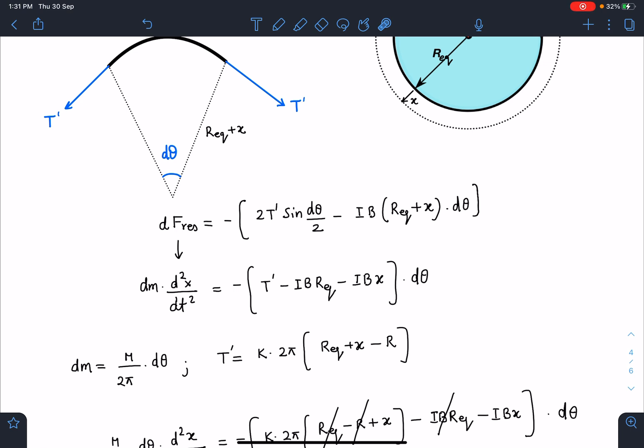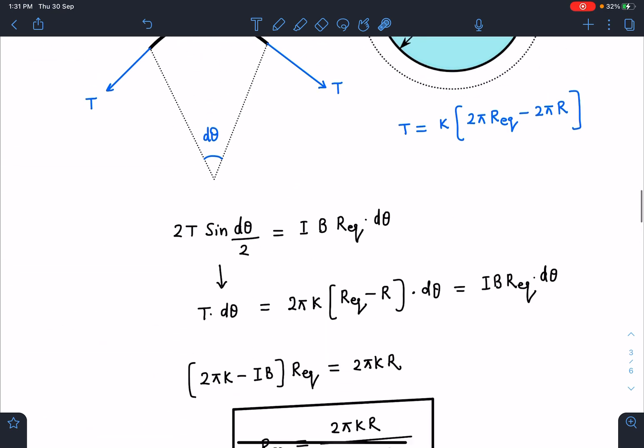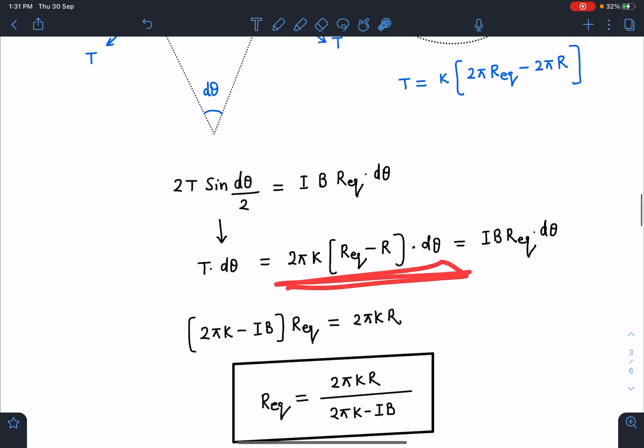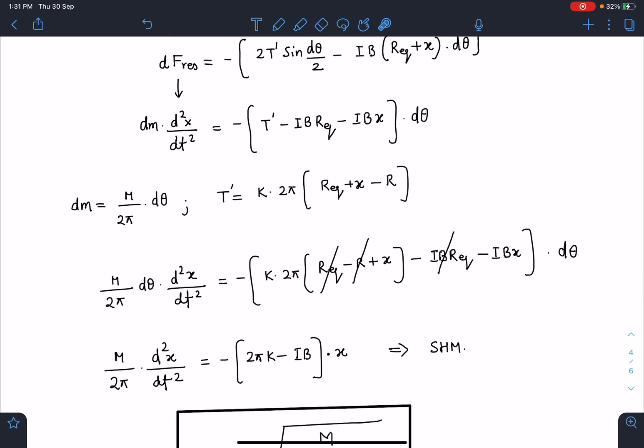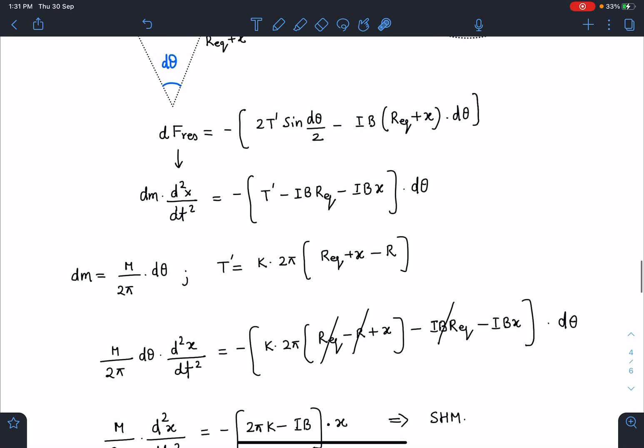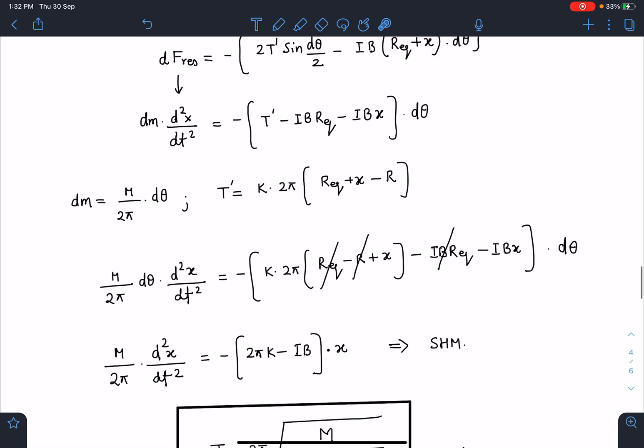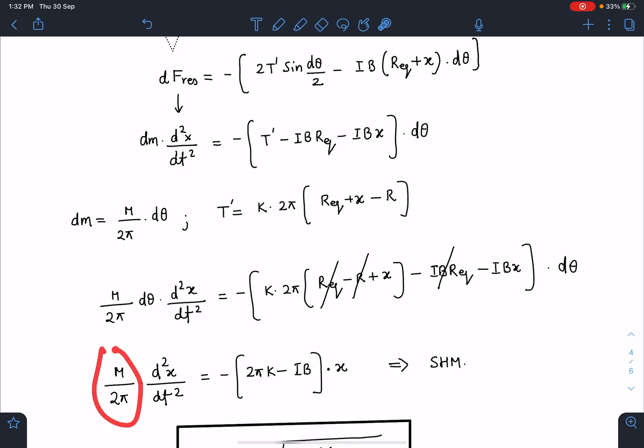So R_eq + x - R₀. Now you see this R_eq - R₀, this is the same expression I was getting here, so it will get cancelled in equilibrium condition. So dm value I am substituting K into 2πK[R_eq - R₀] + x, and this another term will become IB R_eq - IBx. You can see IB R_eq will get cancelled with K into 2πK[R_eq - R₀]. So finally I get M/(2π) d²x/dt² equals...